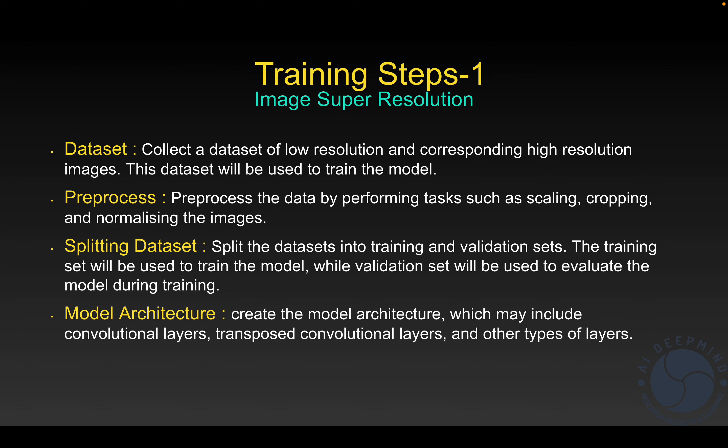The second step is pre-processing. For every deep learning module we prepare, we need to do some pre-processing — either data augmentation, scaling so that image dimensions are consistent, cropping such as random or horizontal cropping, or rotating images by 90 or 180 degrees. We also normalize images with mean zero and standard deviation one.